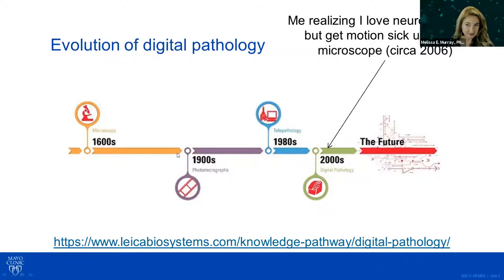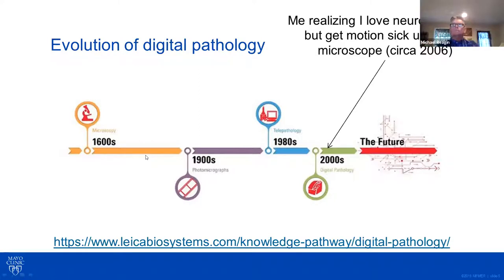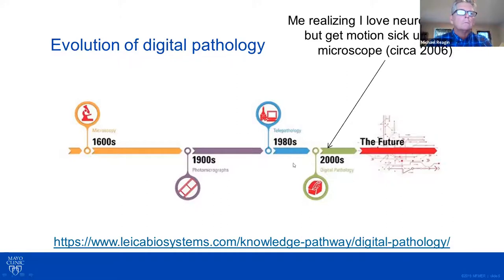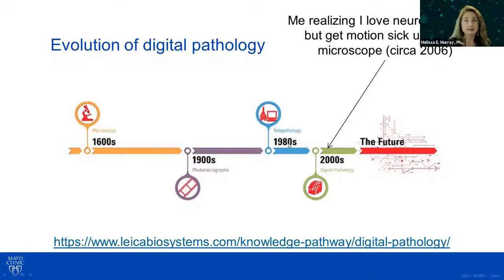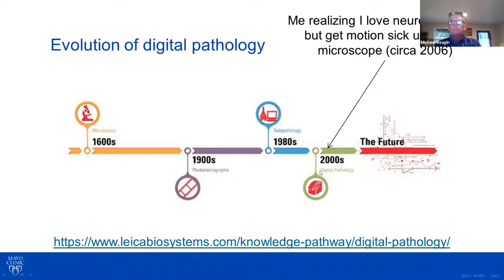From a historical perspective, we've had microscopy since the 1600s, whether that's looking at plant cell biology. This really morphed once we were able to utilize photomicrographs. This continued to evolve as the notion of telepathology was introduced, although not widely accepted until very recently given the current climate where we need to be able to still read slides and communicate. In the 2000s, digital pathology was introduced.